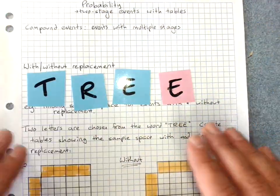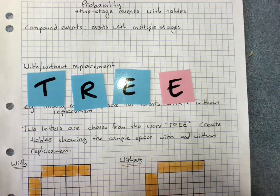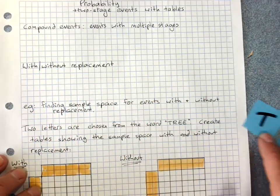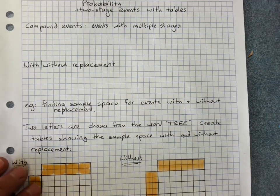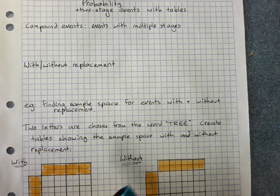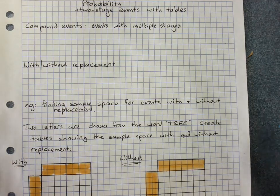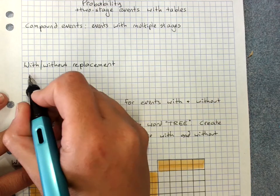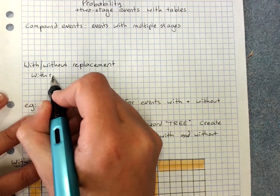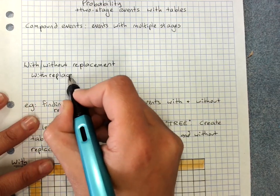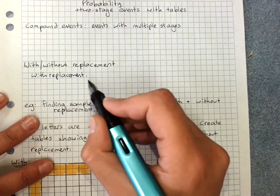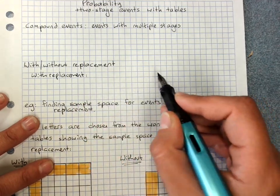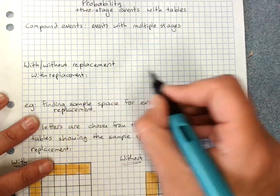With and without replacement is whether you put that item back in. Some events, like rolling a die or tossing a coin, have to be with replacement. With replacement is basically just the exact same outcome can happen twice, once in each event.